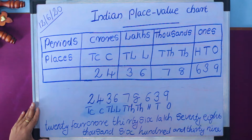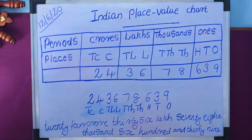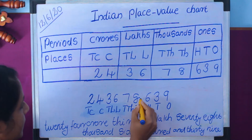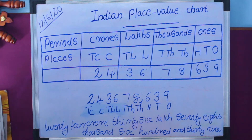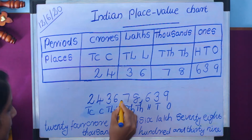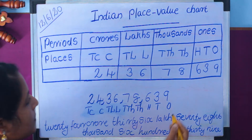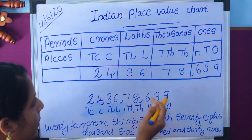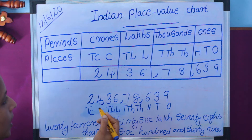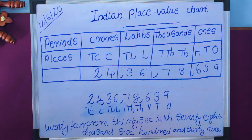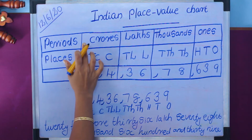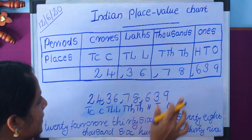In this problem we also want to insert commas. We insert commas from the right side. The first comma comes after the hundreds place. The second comma comes after the ten thousands place. The third comma comes after the ten lakhs place. So we read the number as 24 crore, 36 lakh, 78,639.